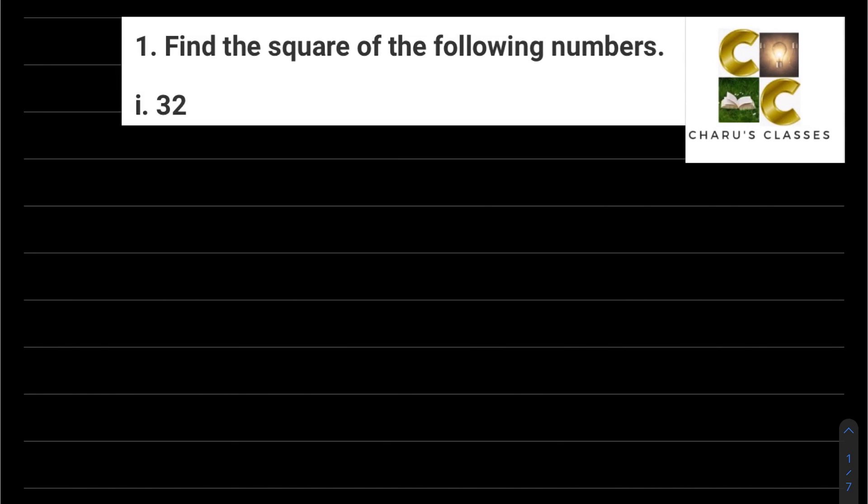Hello students, welcome to Charu's Classes. Today we will be doing Exercise 6.2, Squares and Square Roots, question number one. Find the square of the following numbers. 32 - we have to find the square. So 32 squared is 32 into 32. One way is that I multiply 32 with 32 and I will get the answer. Two twos are four, two threes are six, three twos are six, three threes are nine. So four, twelve.